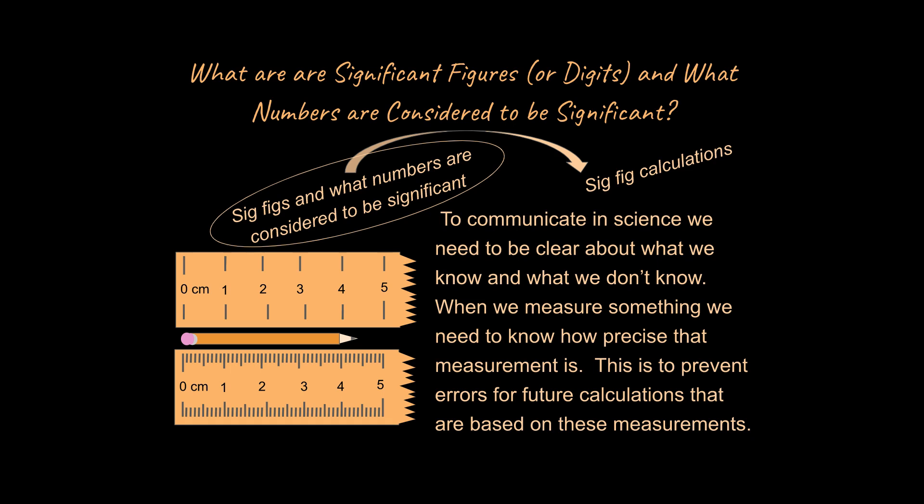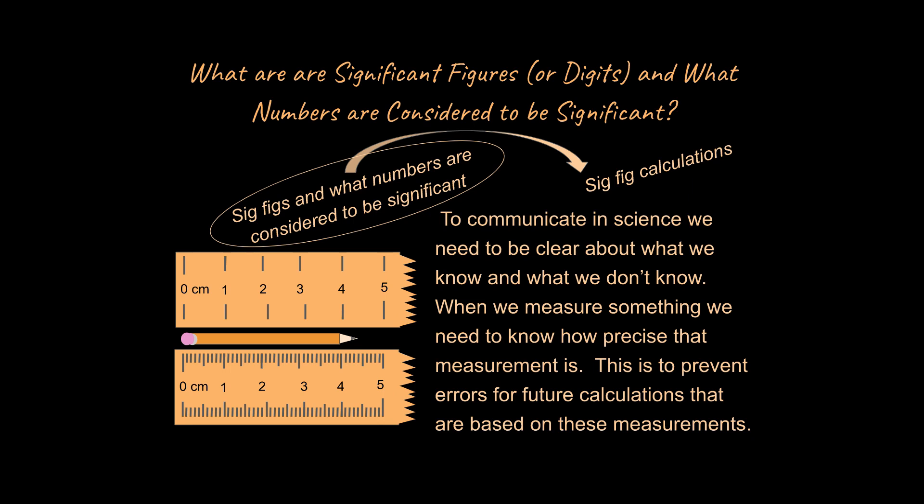So let's take a look at some of the rules that we're going to need to be able to follow as we learn about sig figs and what numbers are considered to be significant figures. So here's a rule that we need to talk about. All non-zero digits in a measurement are significant. So think about what that would be. All right, so a non-zero number just means something other than zero. So here are two examples of numbers and how many sig figs each of them has.